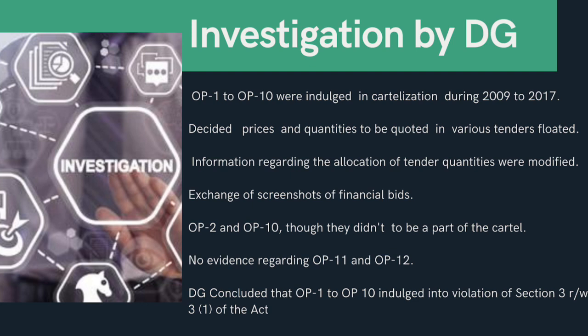OP2 and OP10, though they did not admit to being part of the cartel, did admit that they had exchanged bid-related information through email and messages. Regarding OP11 and OP12, the DG found no evidence. The DG concluded that OP1 to OP10 indulged in cartelization and were therefore in contravention of Section 3 read with Section 3, Subsection 1 of the Act from 2009 to 2017, while no contravention could be found with regards to OP11 and OP12. The DG also identified several officials of OP1 to OP10 to be liable under Section 48, Subsection 1 and/or Section 48, Subsection 2 of the Act for the contraventions committed by their respective companies.